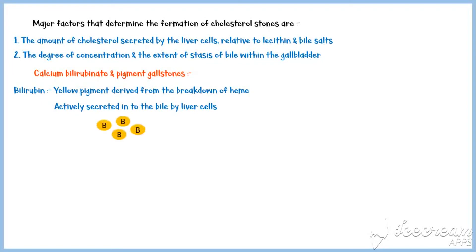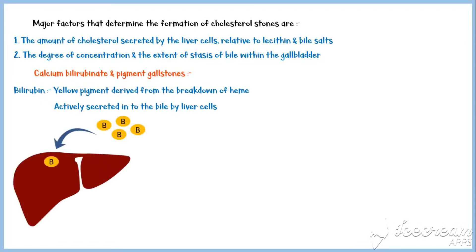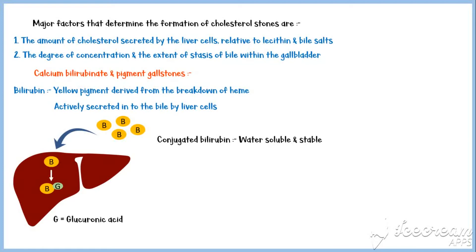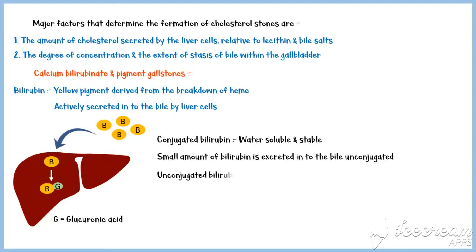In the bloodstream, bilirubin is in its unconjugated form. Once liver cells take up these unconjugated bilirubin molecules, they add a glucuronic acid molecule to each bilirubin molecule to form conjugated bilirubin. Conjugated bilirubin is water-soluble and stable. However, a small amount of bilirubin is excreted into the bile in the unconjugated form. This unconjugated bilirubin tends to form insoluble precipitates with calcium in bile.